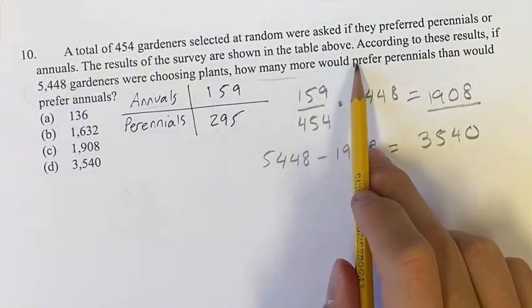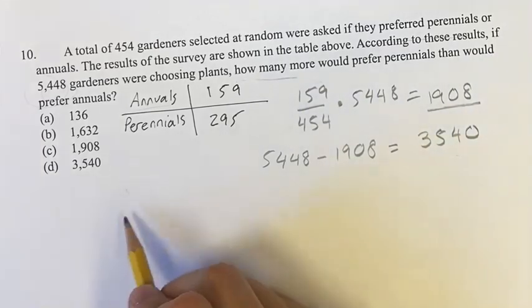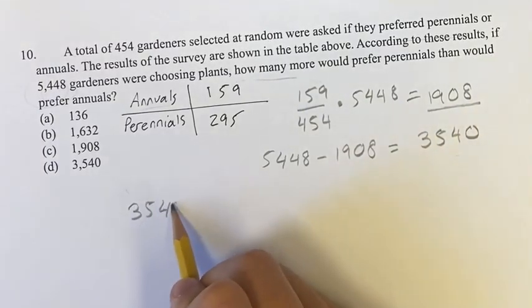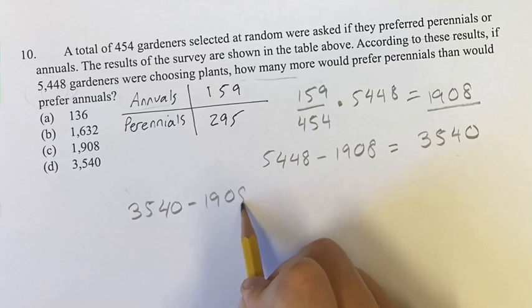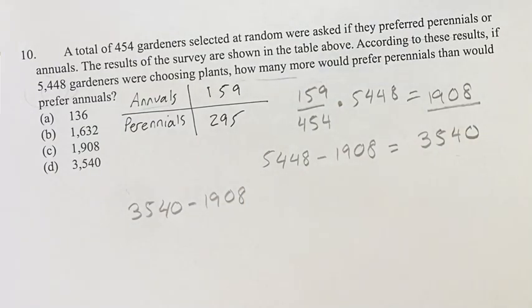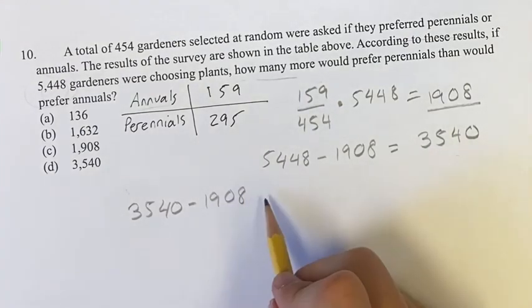Now, if we're looking at how many more would prefer perennials than would prefer annuals, that's just the difference between these two. So we have 3540 minus 1908. It's going to give us 1632.